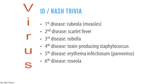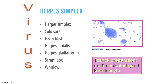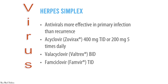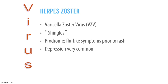The numbered diseases: First is rubeola (measles), second is scarlet fever, third is rubella, fourth is toxin-producing staphylococcus, fifth is erythema infectiosum, and sixth is roseola. Herpes simplex virus causes cold sores, fever blisters, herpes labialis, herpes gladiatorum, scrumpox, or herpetic whitlow. Diagnosis is by Tzanck preparation showing multinucleated giant keratinocytes. Antivirals are more effective in primary infection than recurrence; acyclovir 400 mg three times daily or 200 mg five times daily, valacyclovir, or famciclovir can be given.